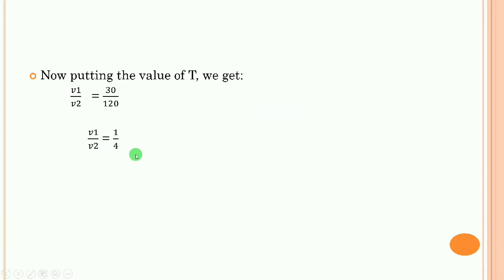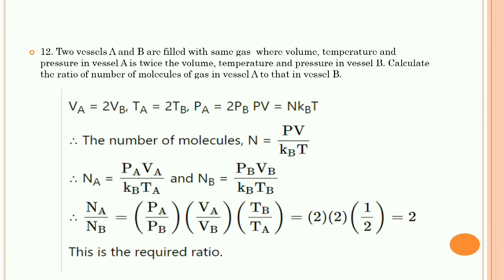Problem 12: Vessels A and B are filled with the same gas where volume, temperature, and pressure in vessel A is twice the volume, temperature, and pressure in vessel B. Calculate the ratio of molecules of gas in vessel A to that in vessel B. Given: V_A = 2V_B, T_A = 2T_B, P_A = 2P_B. We use the ideal gas formula PV = Nk_BT, so N = PV / (k_B × T).